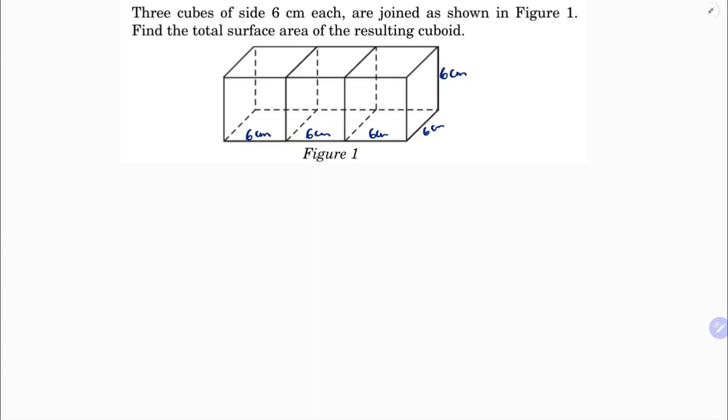This forms a cuboid. 6 cm is the edge of each cube. When we join three cubes, the total length becomes 18 cm. The breadth of the cuboid is 6 cm and the height is 6 cm.